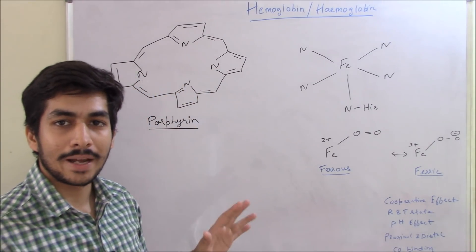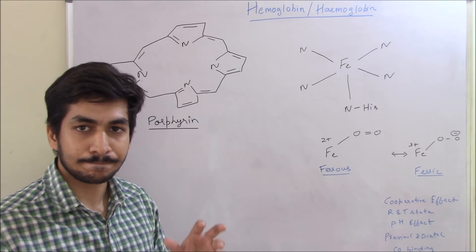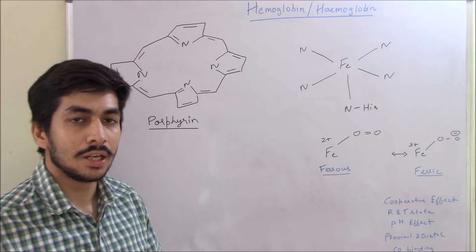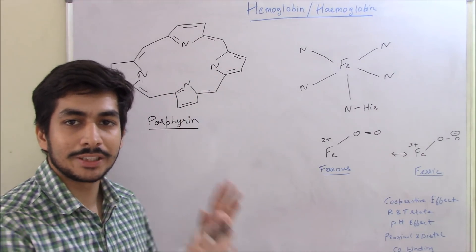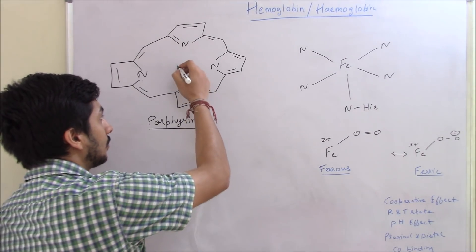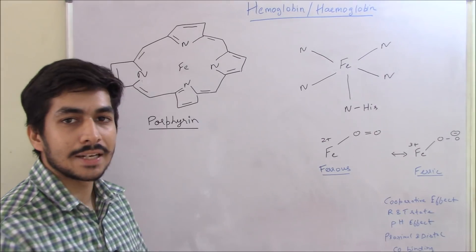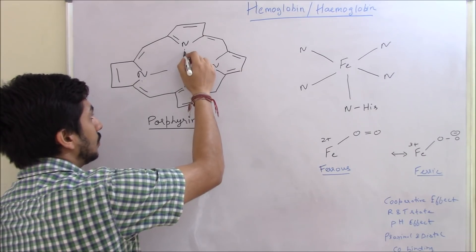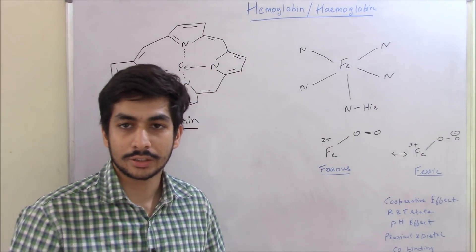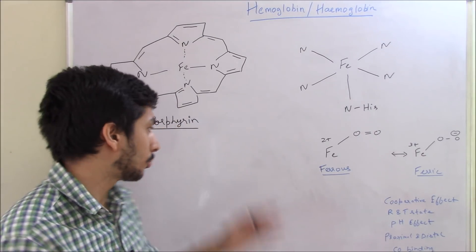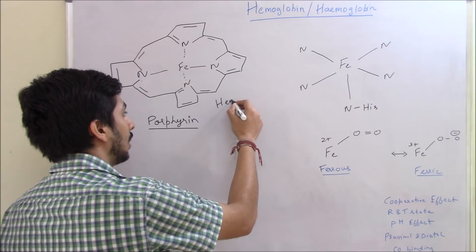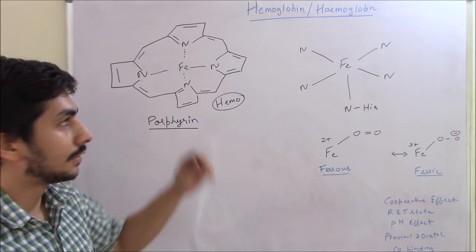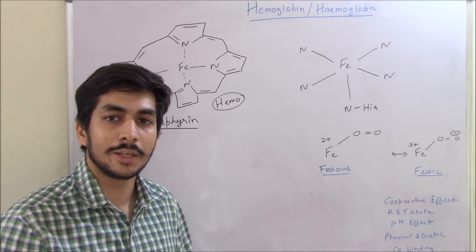The porphyrin ring has four pyrrole groups attached by methane bridges — that is the basic porphyrin structure. Once an iron atom is coordinated into this porphyrin structure, it's called a heme group. So a porphyrin group coordinated to an iron is called a heme group. A hemoglobin, as the name suggests, can consist of a heme group.